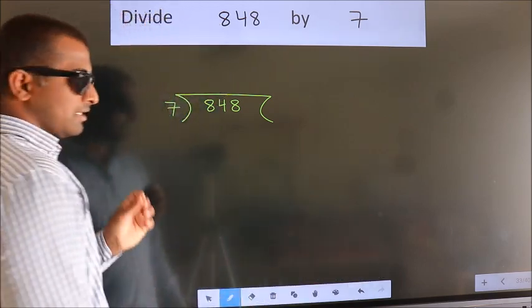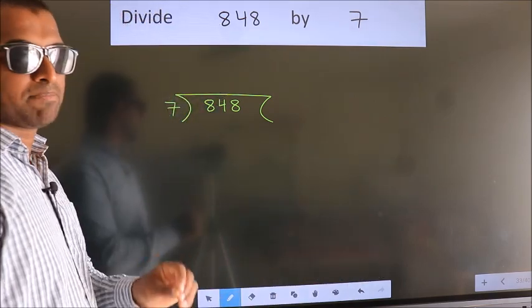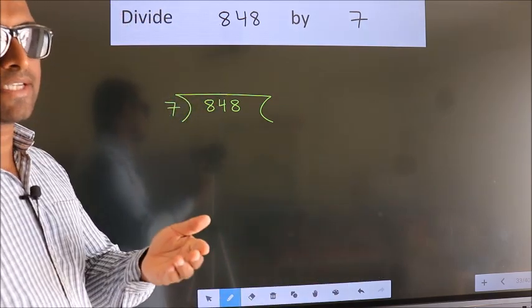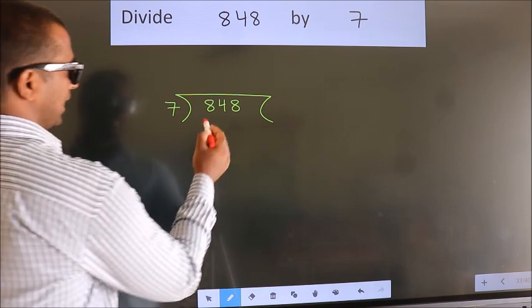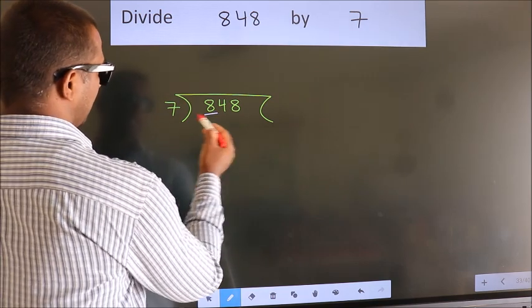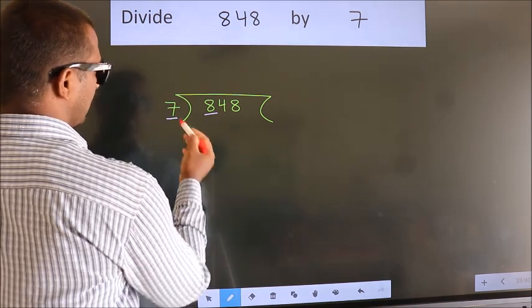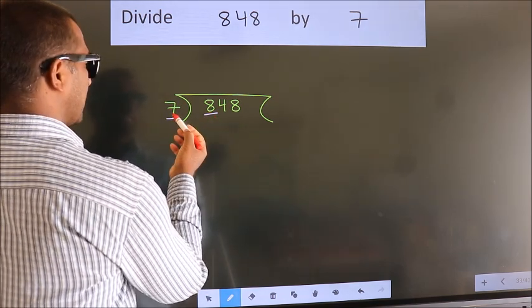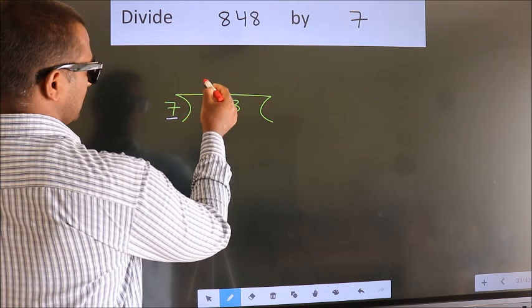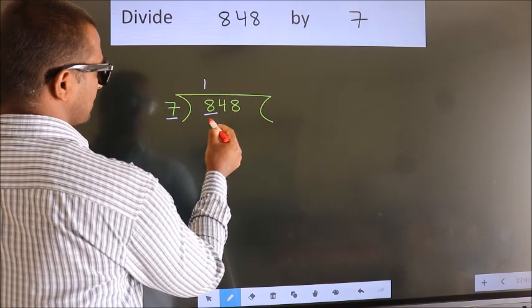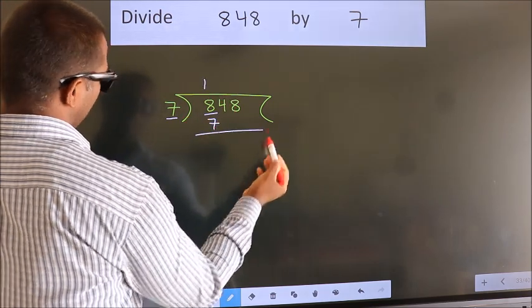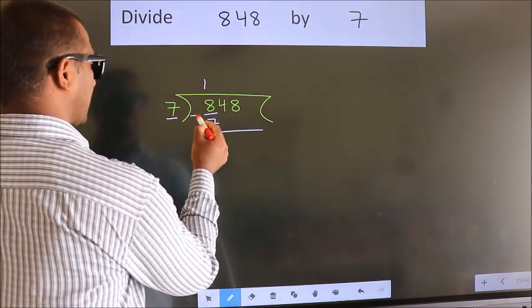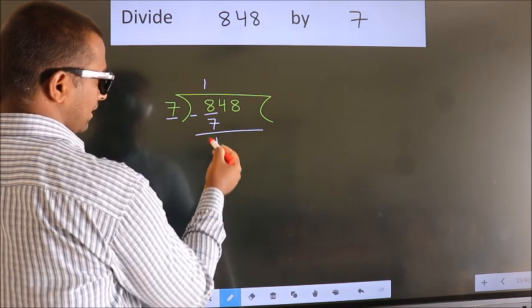This is your step 1. Here we have 8, here 7. A number close to 8 in the 7 table is 7 once 7. Now we should subtract. We get 1.